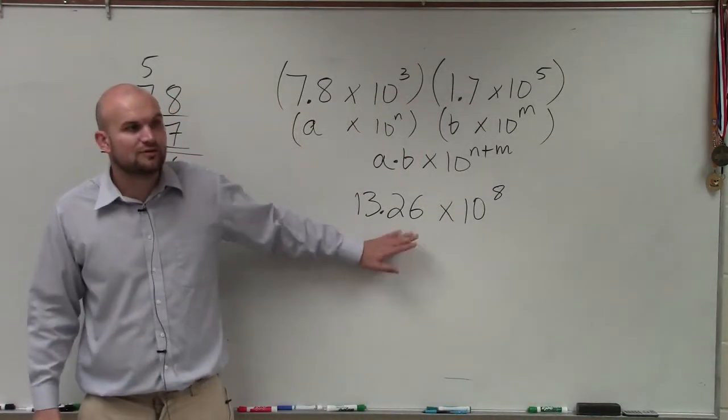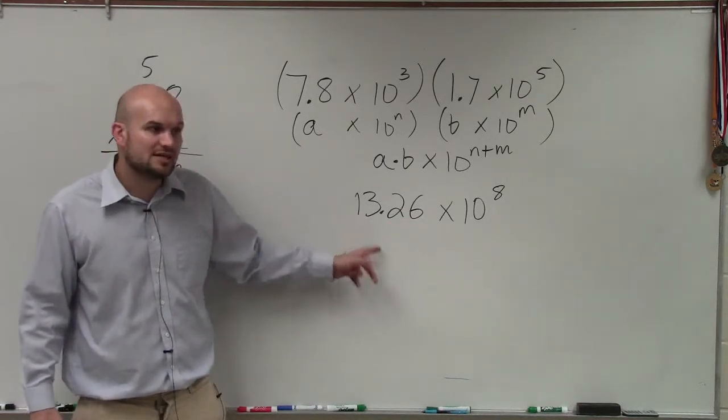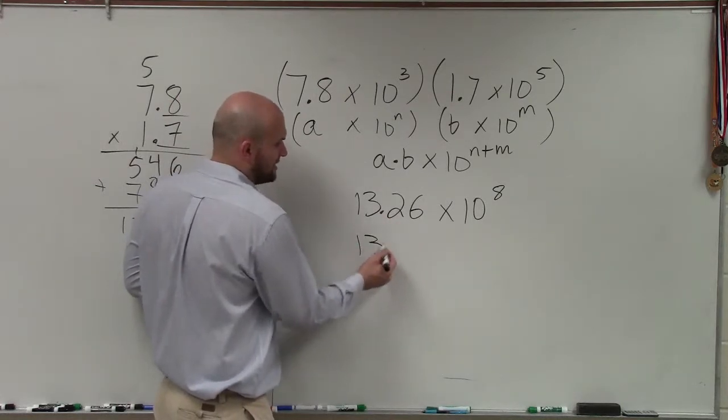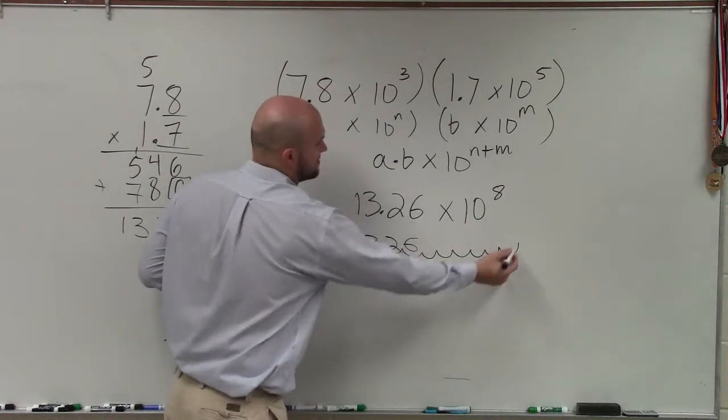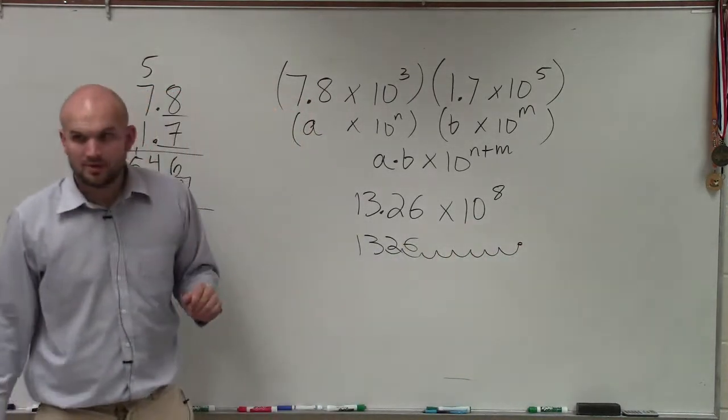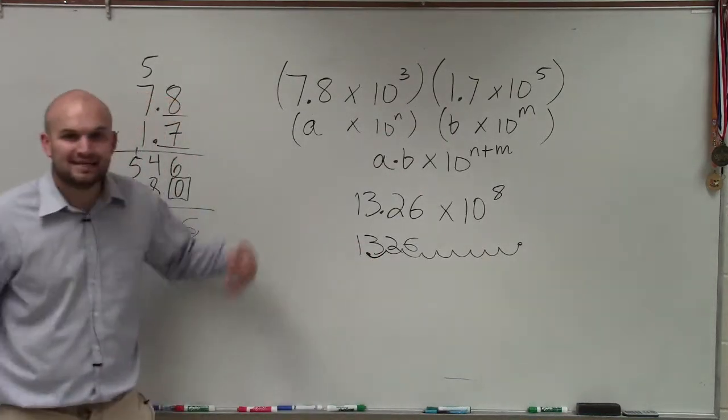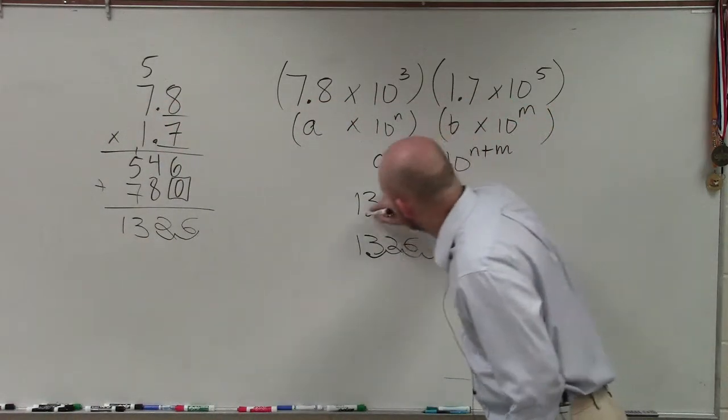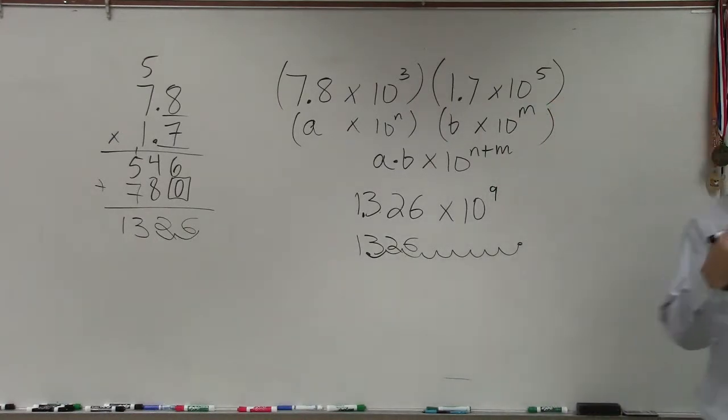Is this in scientific notation? No, because I have 13, which is greater than 10. Now remember, if I was going to write this out, it would be 13, 2, 6, and I'd do 1, 2, 3, 4, 5, 6, 7, 8. Would anybody agree with me? But now I need to put the decimal point over here. So I'm adding an extra movement of place value. So instead of doing 8, I'm going to say this is 1.326 times 10 to the 9th, because I'm adding one more place value that I have to move.